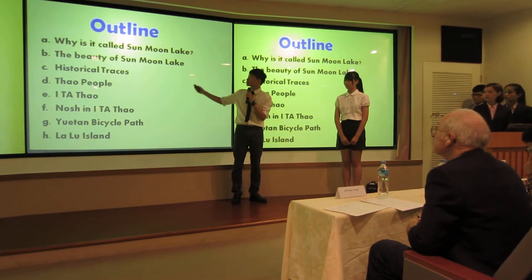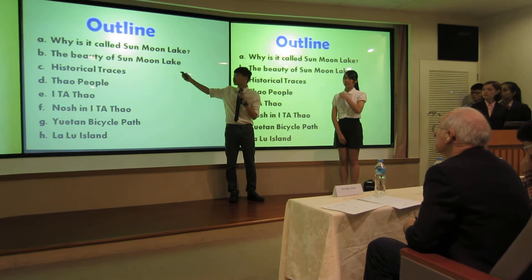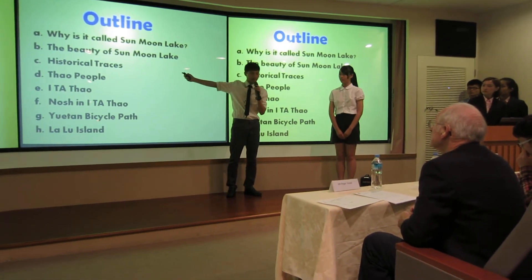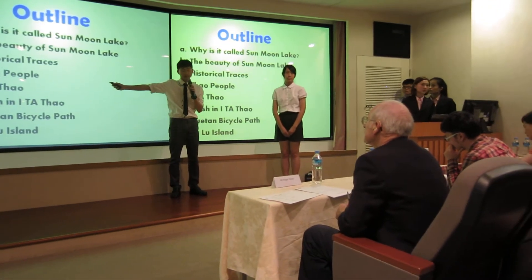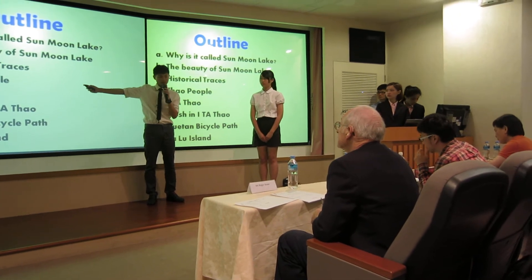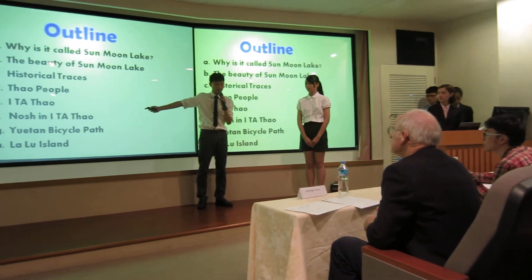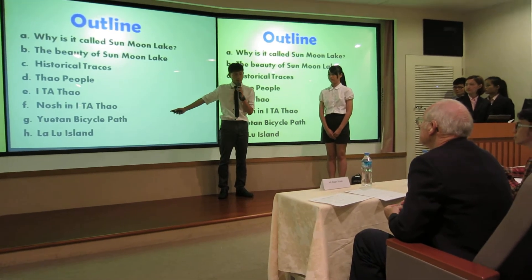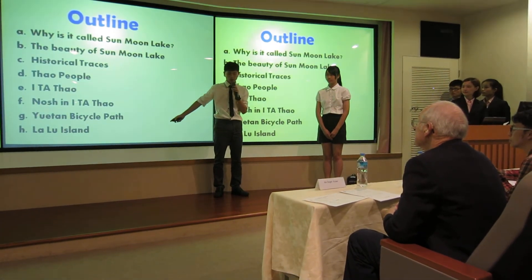This is our outline. It's called Summerlake. The beauty of Summerlake. Historical background. South people. Ita-sau. Nashi Ita-sau. Yaitan Bicycle Pass. Lalu Island.